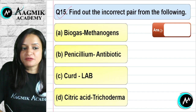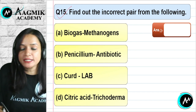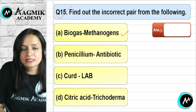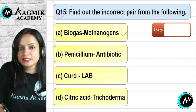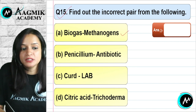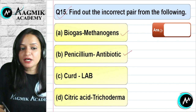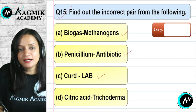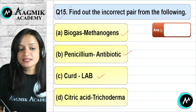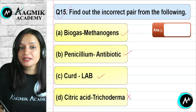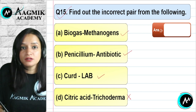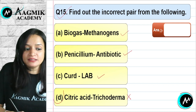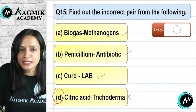Question number 15: Find the incorrect pair. Biogas with methanogens is correct. Penicillium with antibiotic is correct. Curd with lactic acid bacteria is correct. Citric acid with Trichoderma is incorrect — Trichoderma is a fungus that is not a source of citric acid; citric acid is produced by bacteria. The correct (incorrect pair) option is D.